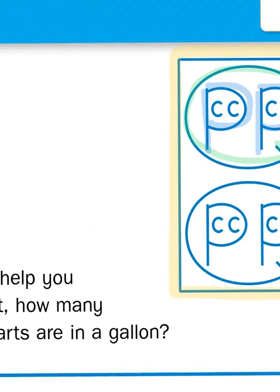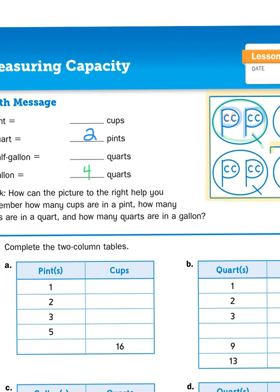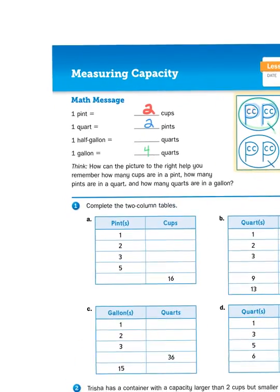And inside each of the letter Ps, there are two letter Cs, or cups. There are two cups for every pint. So there are two cups for every pint, two pints for every quart, four quarts for every gallon.